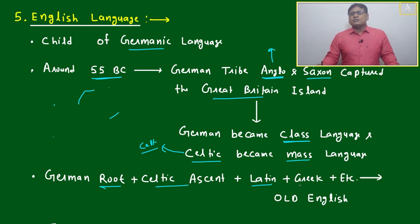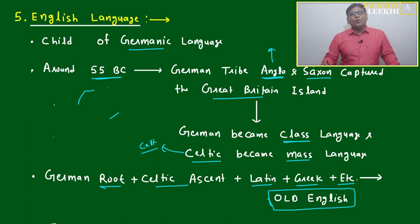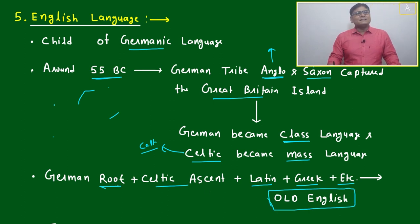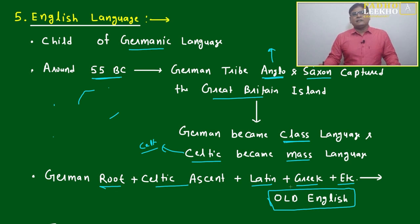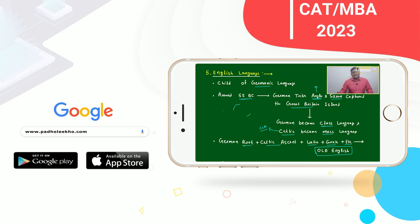A group of words came from Latin, Greek, French, and so on. Old English developed as a mixture of: Germanic root, Celtic accent, and groups of words from Latin, Greek, French, and Sanskrit. They were compiled together and one new language developed — that is Old English.